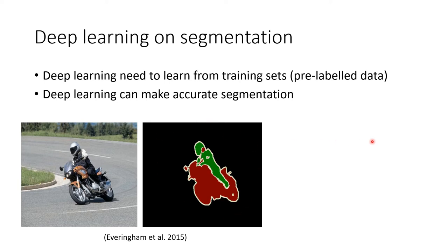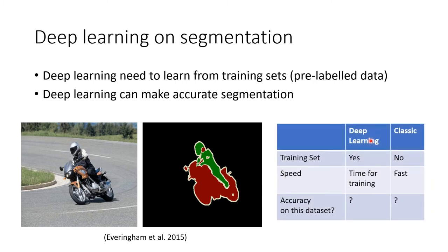The difference between deep learning and classic segmentation methods is that deep learning requires a training set and takes slightly longer to segment images due to the training process. On the other hand, classic segmentation such as thresholding doesn't need to be trained and can segment images quickly. We would like to find out the performance of deep learning versus classic methods on our dataset.